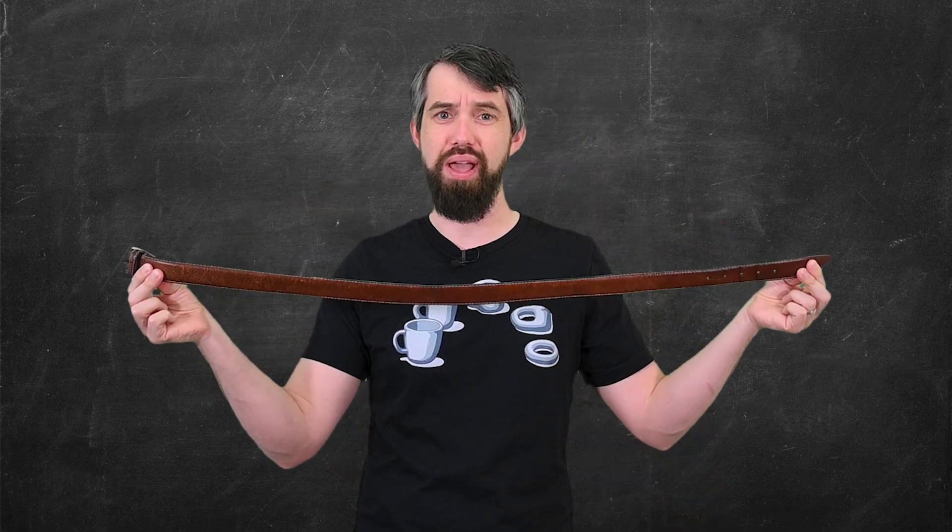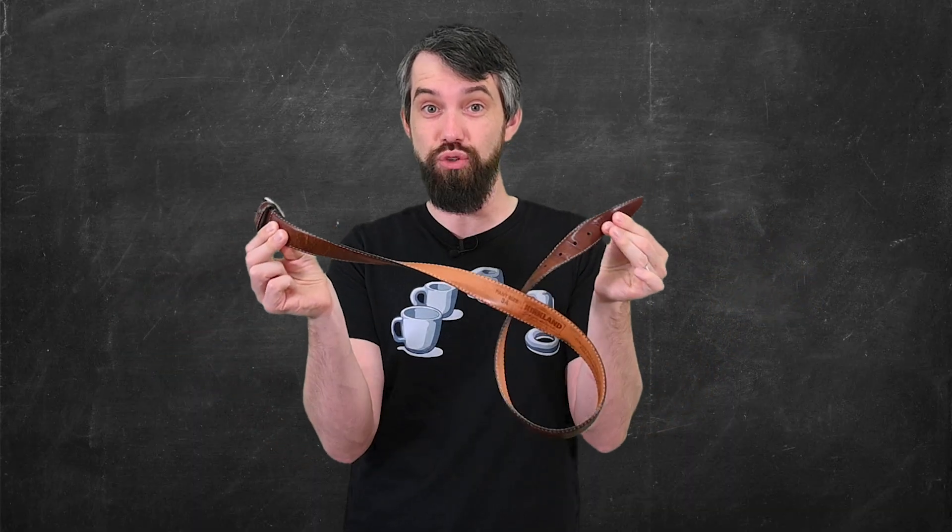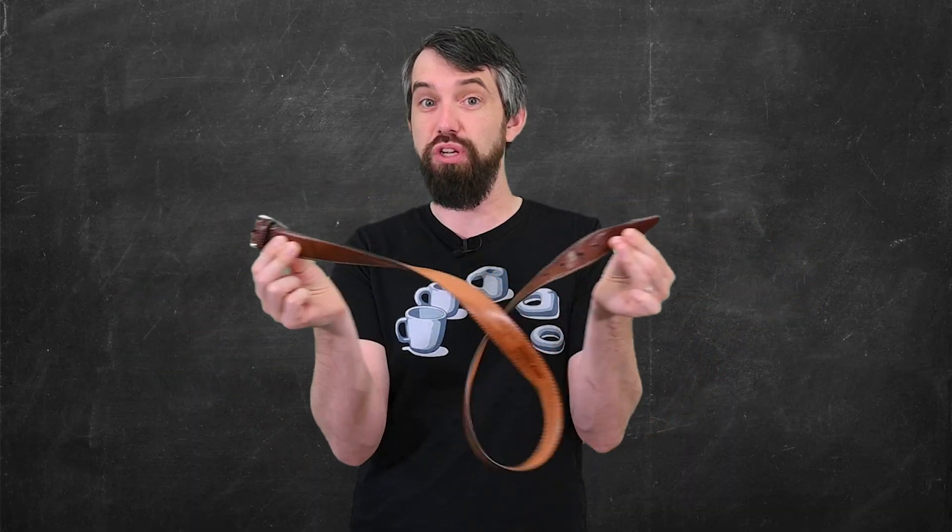I can do basically the same trick with my belt. I'm going to give it a π, a 2π, a 3π and a 4π rotation so this belt is nice and twisted and I can show you that I can actually untwist this extremely twisted belt without changing the endpoints.